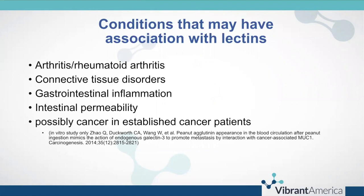Conditions that may have association with lectins — the research in humans is in its infancy. We can say that there are case studies with arthritis and rheumatoid arthritis, connective tissue disorders, and gastrointestinal inflammation seems established as far as case studies and observational reports go. Intestinal permeability is also suggested, and possibly associations in established cancer patients — specifically with peanut and gluten lectins — though we cannot say peanut lectin causes cancer in individuals who don't already have it.